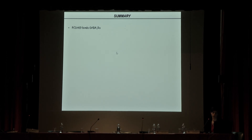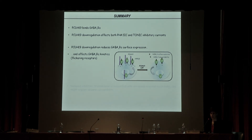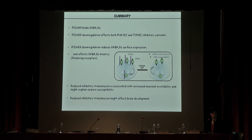To summarize: protocadherin-19 binds GABA-A receptors, and this binding is important for at least two reasons. First, protocadherin-19 can regulate both the phasic and tonic components of inhibitory currents. Second, it modulates inhibitory currents by at least two mechanisms — regulating the amount of receptor on the surface and regulating their kinetics. Finally, this reduction in inhibitory transmission is associated with increased neuronal excitability that may correlate with higher seizure susceptibility, and we cannot exclude that these GABAergic defects may contribute to developmental brain deficits.